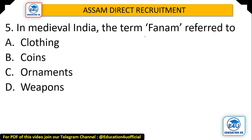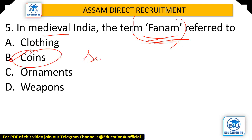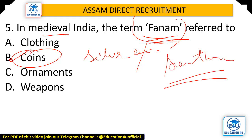Question: In medieval India, the term 'Phanam' referred to what? Options: Clothing, Coins, Ornaments, and Weapons. The answer is Coins. Phanam were silver and golden coins mainly used in South India, the southern parts of India. They were called 'Phanam'.